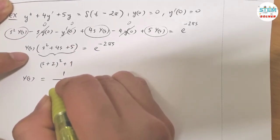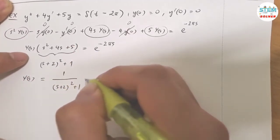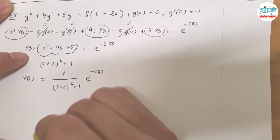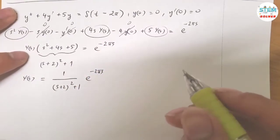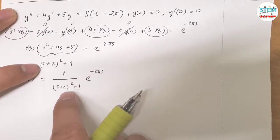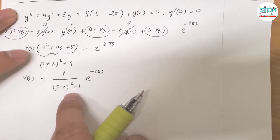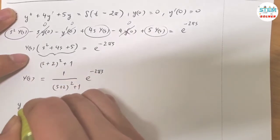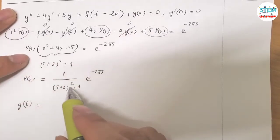Now divide both sides by this one. So I have 1 over (S+2)² plus 1 times e to the negative 2πs. So you will know why I have to rewrite this in this form.